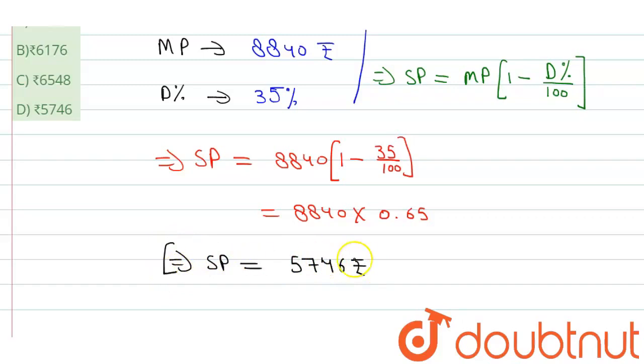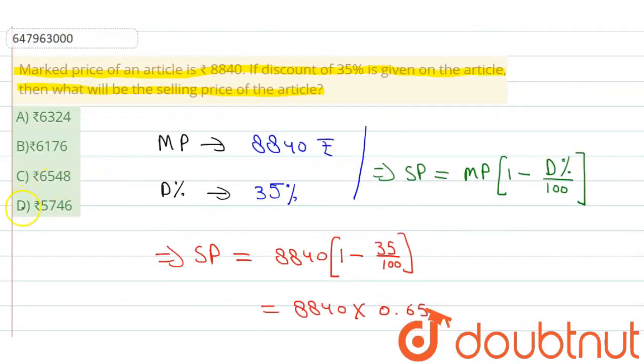5746 रुपये होगी selling price of article. अब हम लोग match कर लेते हैं अपने options. So option number D, रुपये 5746 will be the right answer. Okay, thank you so much guys, मिलते हैं अगले सवाल के साथ.